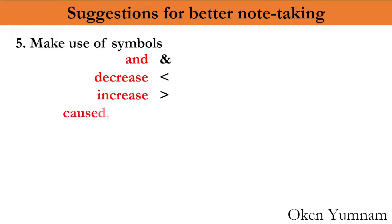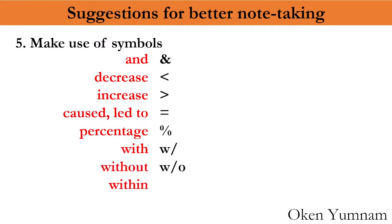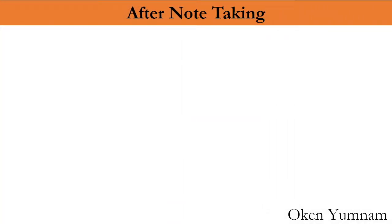For 'leads to', you can simply write the equals symbol. For percentage, use the percent symbol instead of writing the whole word. For 'with', simply W would do. For 'to' as a preposition or the number two, you can simply write the figure 2. This will make your note-taking faster.